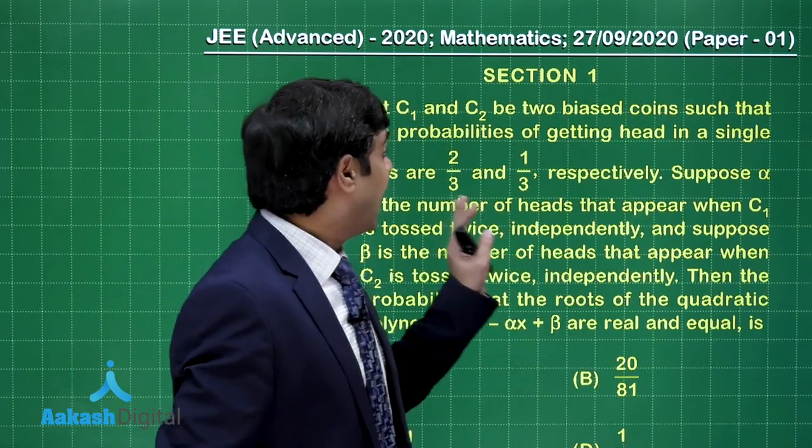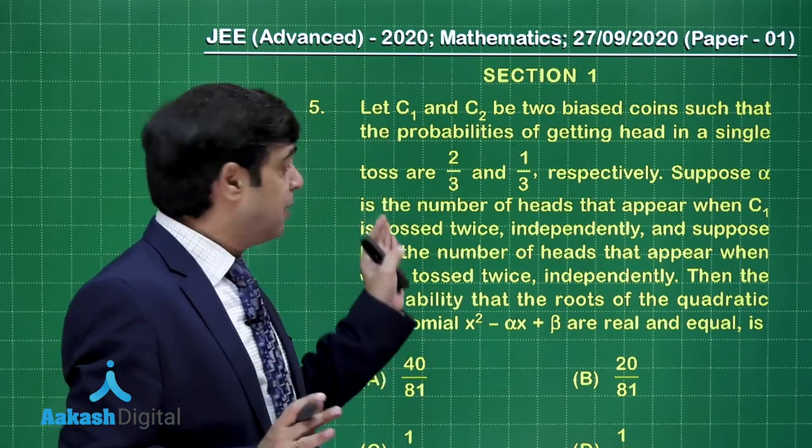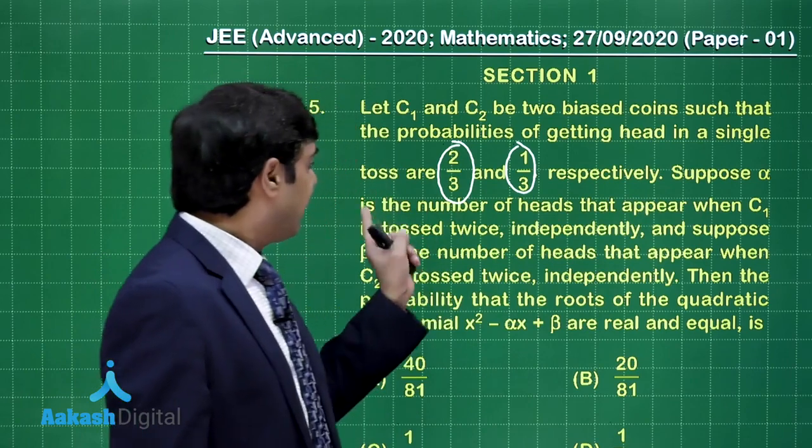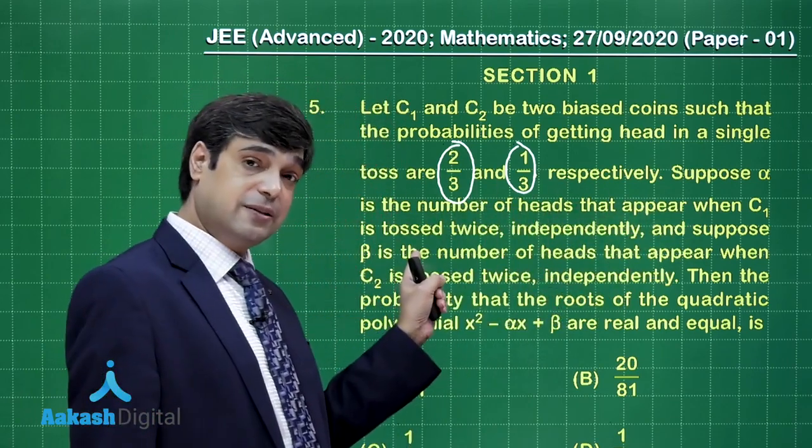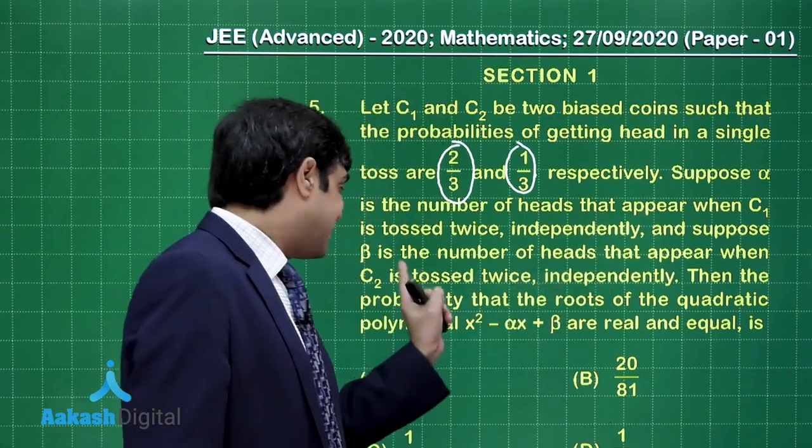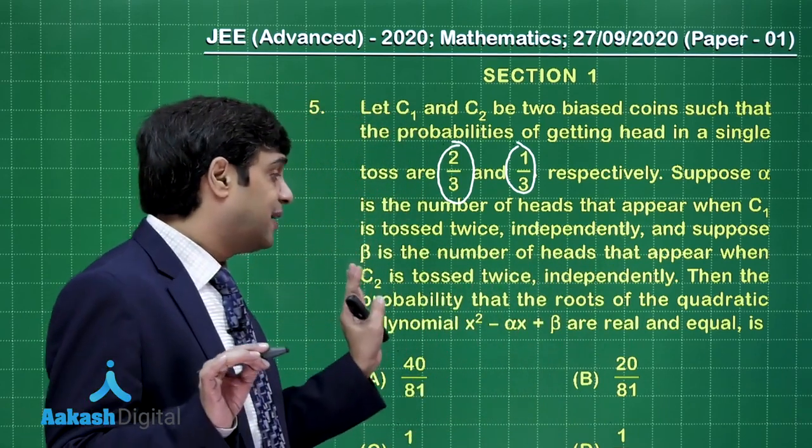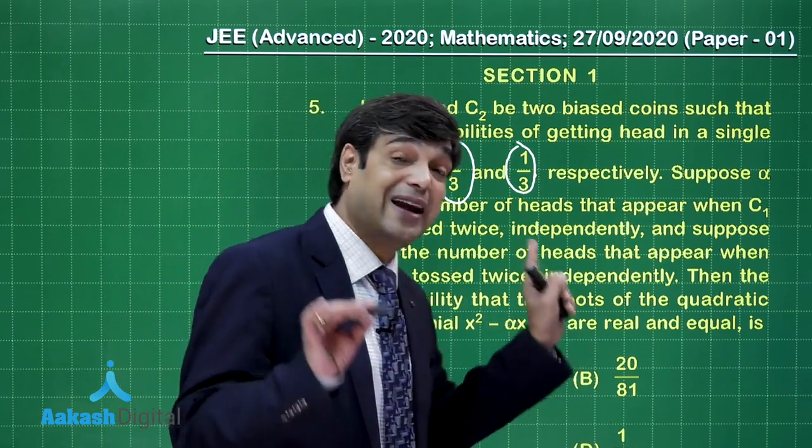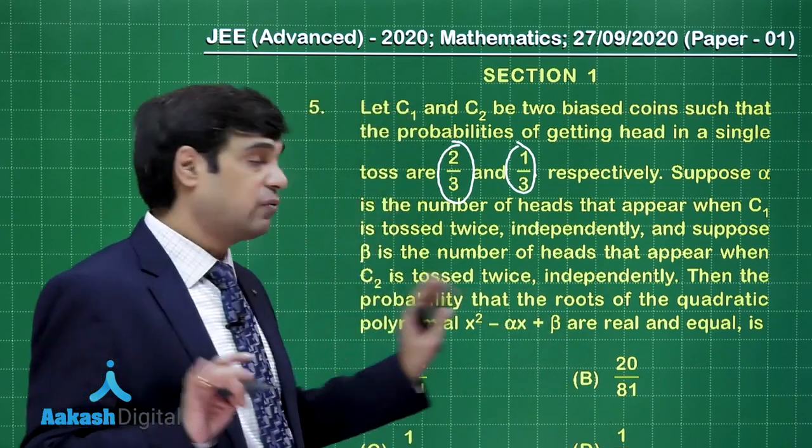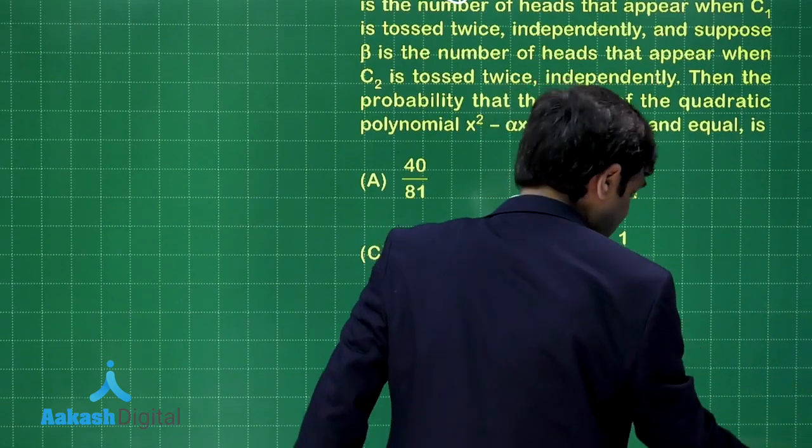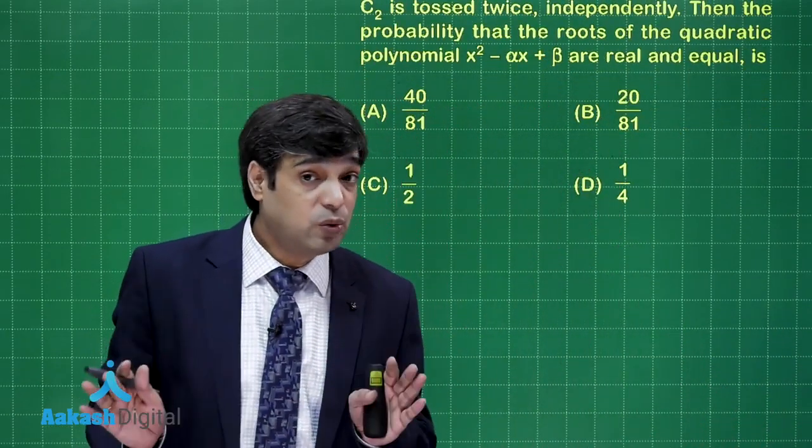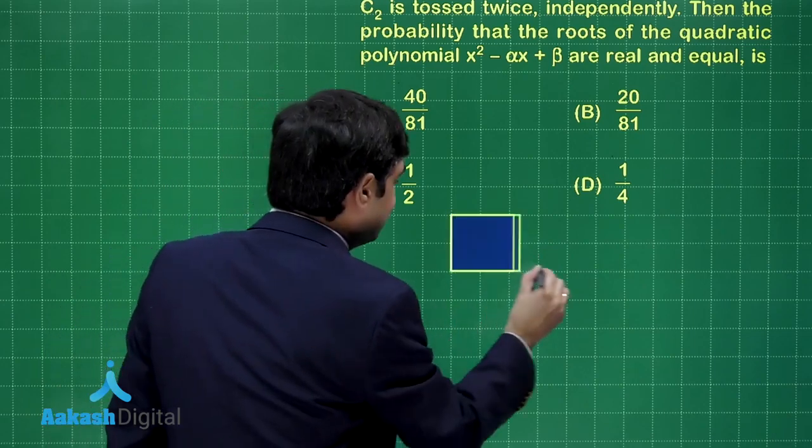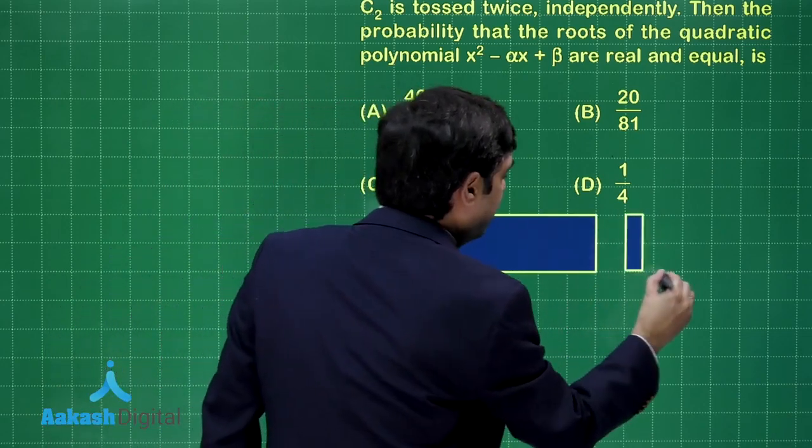Let C1, C2 be two biased coins such that the probabilities of getting head in a single toss are 2 by 3 and 1 by 3 respectively. Next, suppose alpha is the number of heads that appear when C1 is tossed twice and beta is the number of heads that appear when C2 is tossed twice independently. Then the probability that the roots of the quadratic x square minus alpha x plus beta are real and equal, that is D is equal to 0 is we have to opt. Now when you are tossing coin twice, possibility for getting heads 0, 1, 2. So let us start this question and plan how we have to go for it.